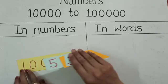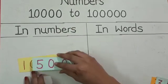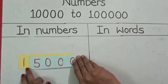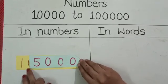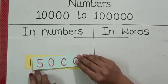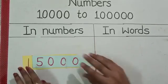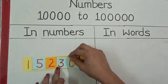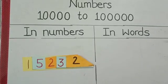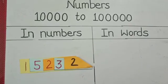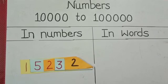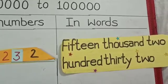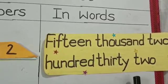Now, 10,000 and 5,000. Students, these both numbers are of thousands place. So it will be read collectively, 15,232. So now our numerals become 15,232. And in words, fifteen thousand two hundred thirty-two.